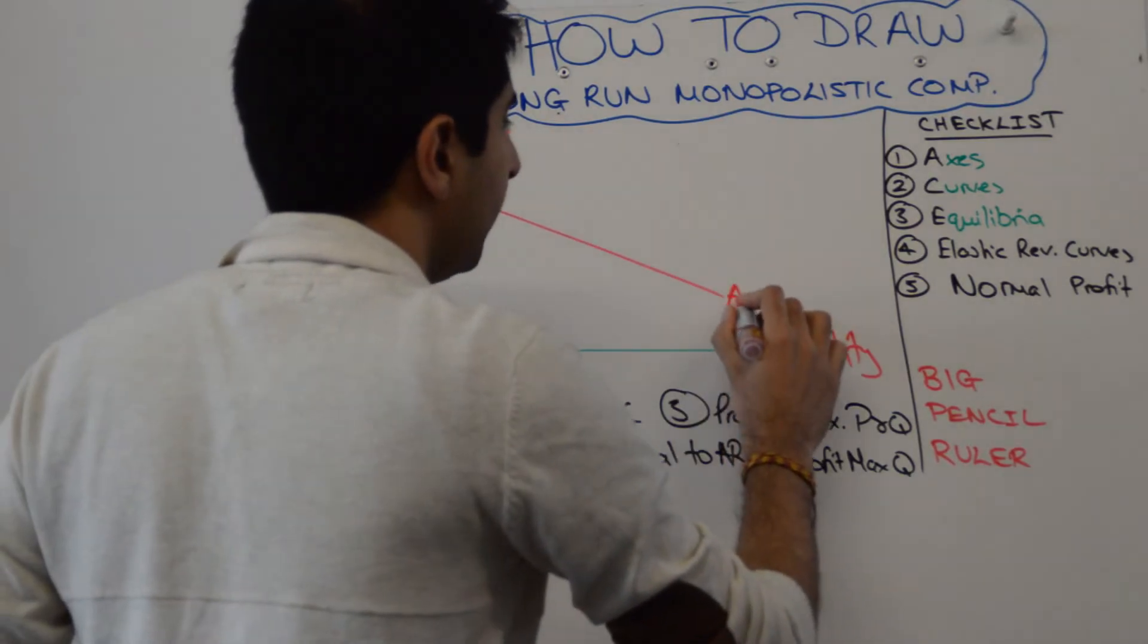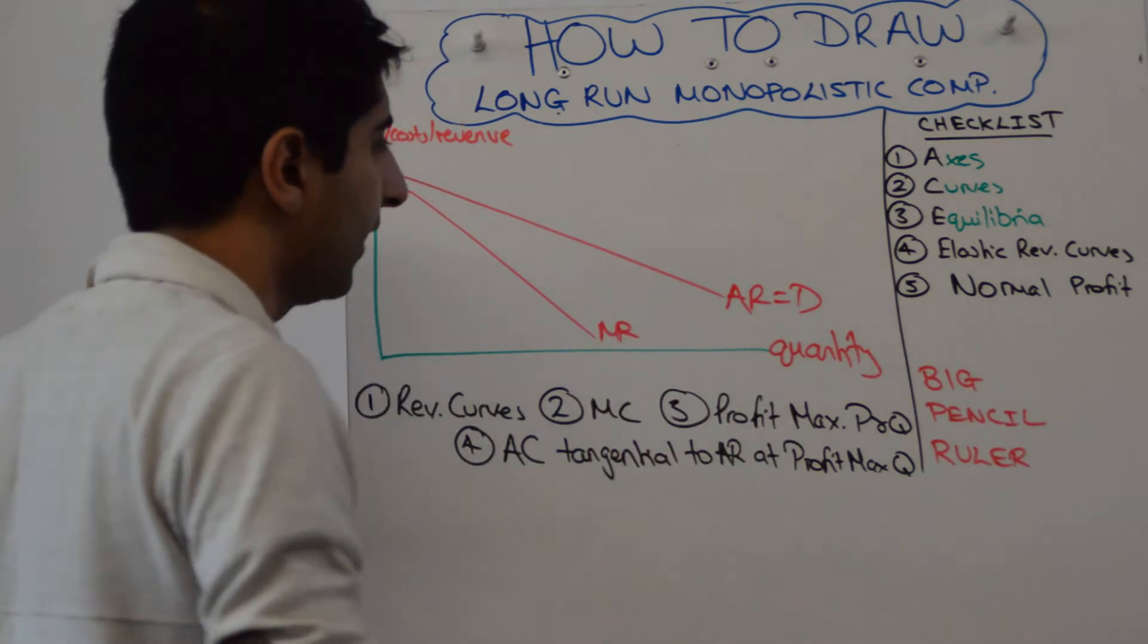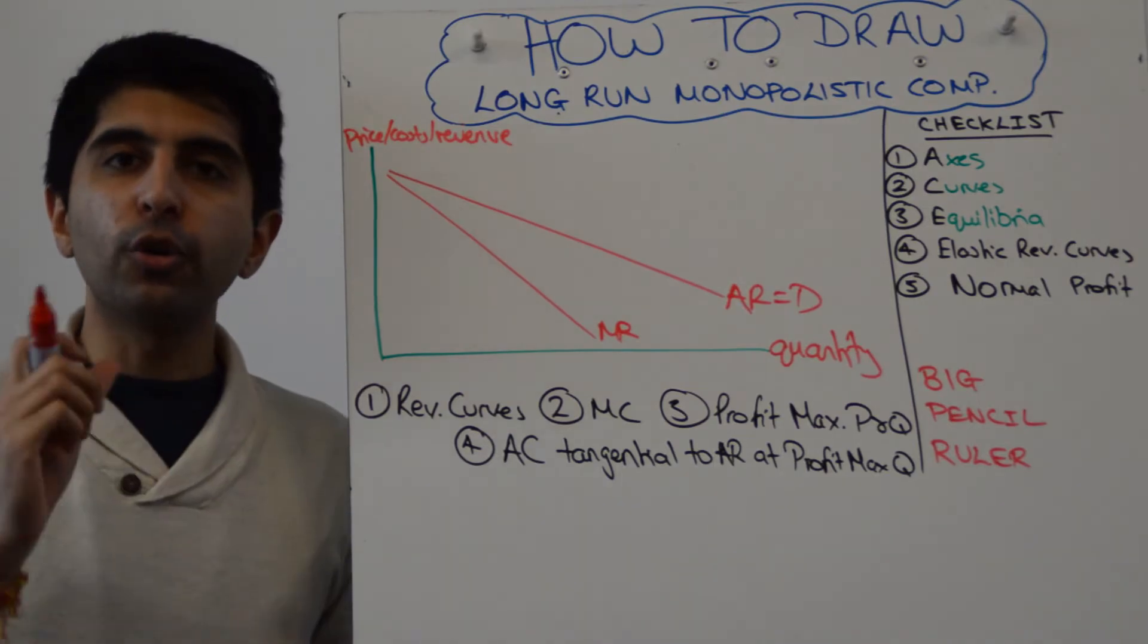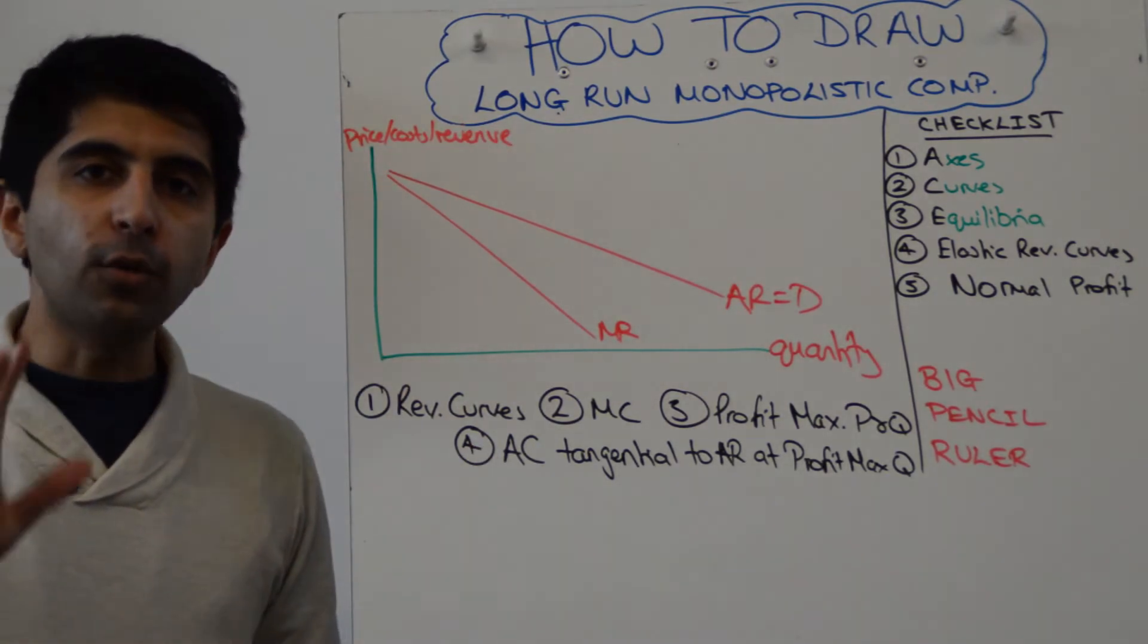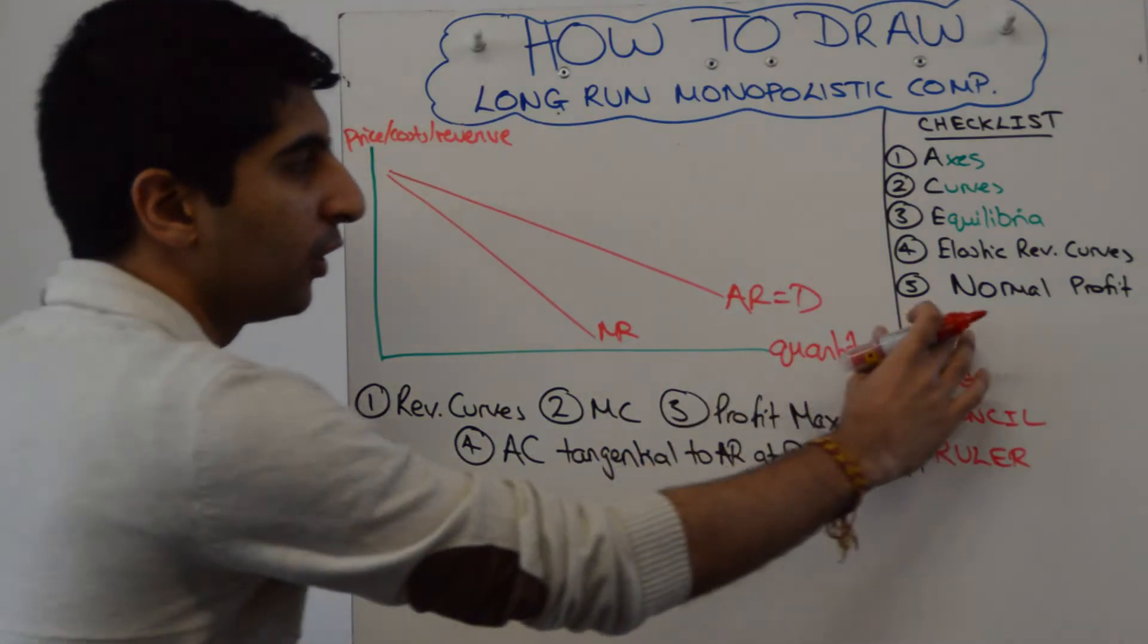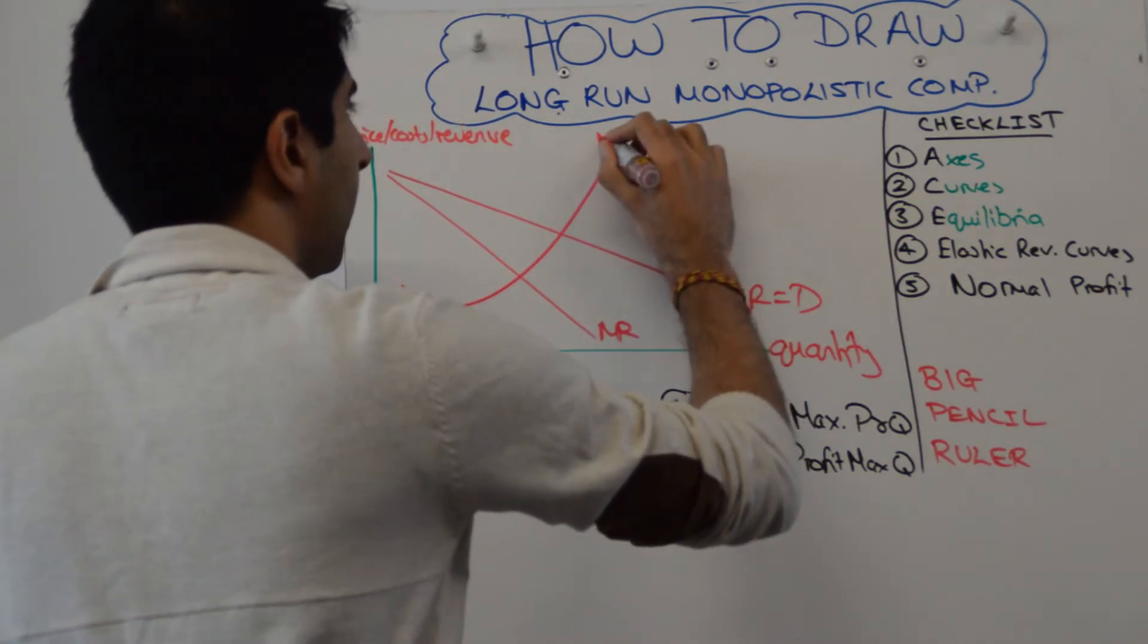One thing that doesn't change is we start with the revenue curve. Draw them slightly more elastic than we used to, so AR and MR like that. Revenue curves first. Then draw your marginal cost curve. We're used to drawing our average cost curve next, but don't do that here. Draw your marginal cost curve first; it's going to help you get the normal profit level right.